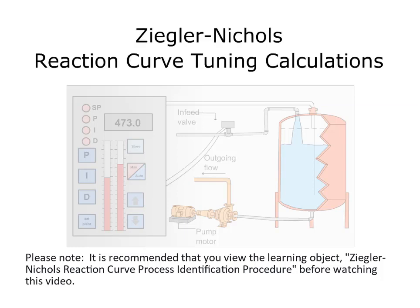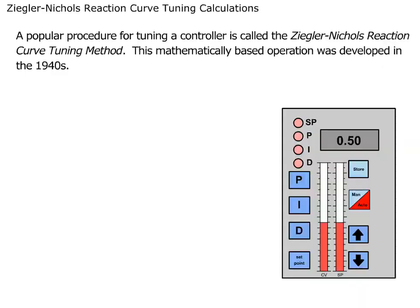Welcome to this video, the Ziegler-Nichols Reaction Curve Tuning Calculations. Please note, it is recommended that you view the learning object, Ziegler-Nichols Reaction Curve Process Identification Procedure, before watching this video. A popular procedure for tuning a controller is called the Ziegler-Nichols Reaction Curve Tuning Method.